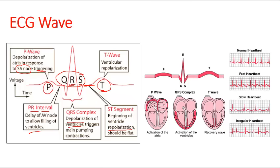The contraction of the ventricle starts at the apex of the heart and moves superiorly, forcing blood upward towards the arteries. This is important because the large arteries are located superiorly, so blood has to start from the bottom of the heart and go up — we need pressure to move from bottom to top.